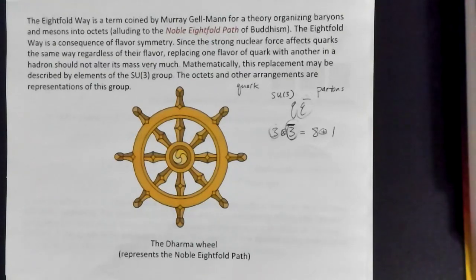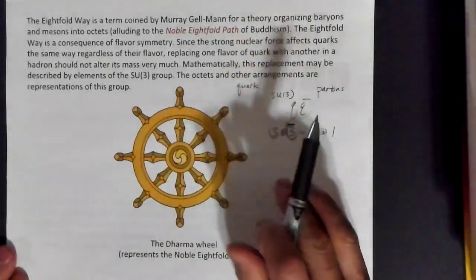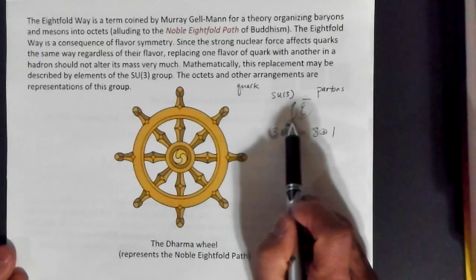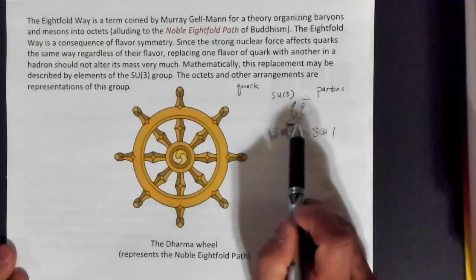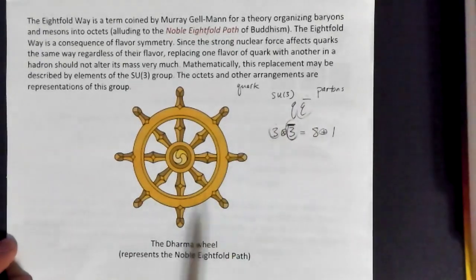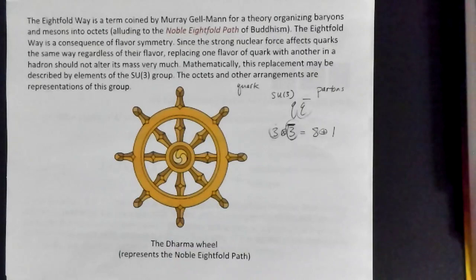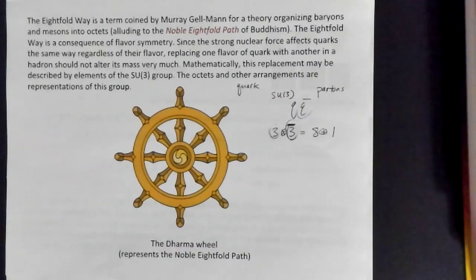Mesons are the combination — we now understand them as being a quark and antiquark at the most basic level, although we've already discussed that it's more complicated than that. You can get all kinds of complexity from the gluons.